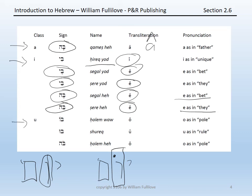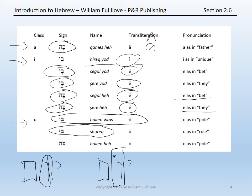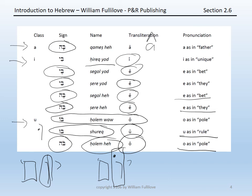Within the U-class vowels, you have the possibility of a vav or hey mater. A vav with an 'o' sound is called a holem-vav, and it makes the long 'o' as in 'pole.' A vav with a 'u' sound is written uniquely as the vav with a dot to its left — this is called a shureq. It is transliterated as 'u' with a circumflex and pronounced as the 'u' in 'rule.' It is the only mater that has a name other than simply the vowel name plus the consonant name. Finally, a hey when used as an 'o' mater is called a holem-hey, transliterated as 'o' with a circumflex, and pronounced as the long 'o' as in 'pole.'